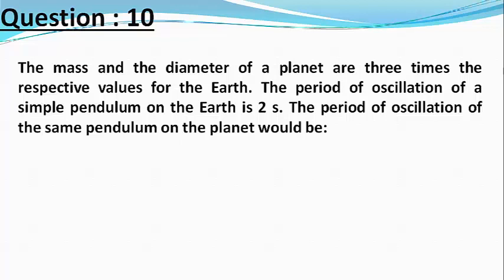The period of oscillations of the same pendulum on the planet would be: Our choices are 2 divided by root 3 seconds, 3 by 2 seconds, root 3 divided by 2 seconds, and 2 root 3 seconds.